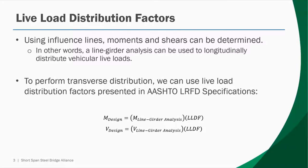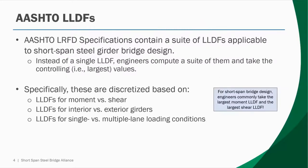As stated in the previous video, influence lines can be used to longitudinally distribute the live loads presented in AASHTO, and moments and shears can be generated for the purpose of design. However, those values need to be distributed transversely — in other words, we need to determine how much of those longitudinal moments and shears need to be distributed to each girder. Fortunately, AASHTO specifications provide a tool for engineers to do this, called live load distribution factors. Employing them is really easy: you take the moments and shears generated from a conventional line girder analysis and then adjust them by the appropriate live load distribution factor to obtain the moments and shears necessary for design.